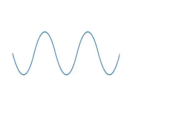A sine wave is a smooth, repetitive waveform. One completion of the repeating wave pattern is called a cycle. The time it takes to complete one cycle of the wave is called the period.